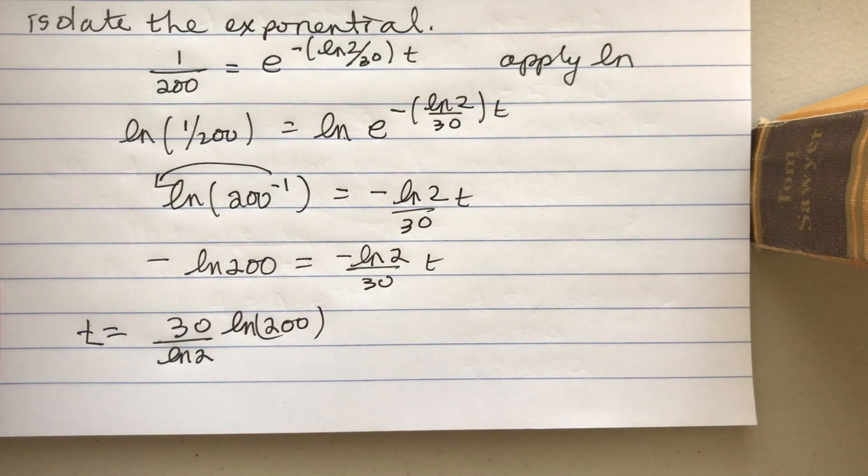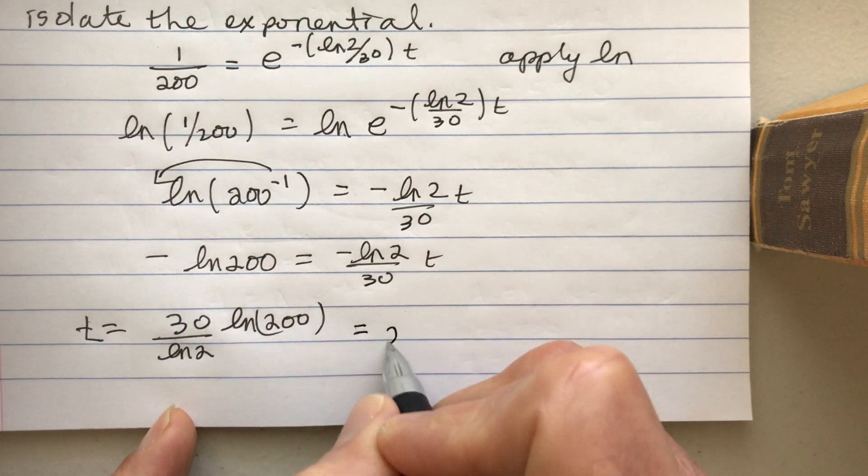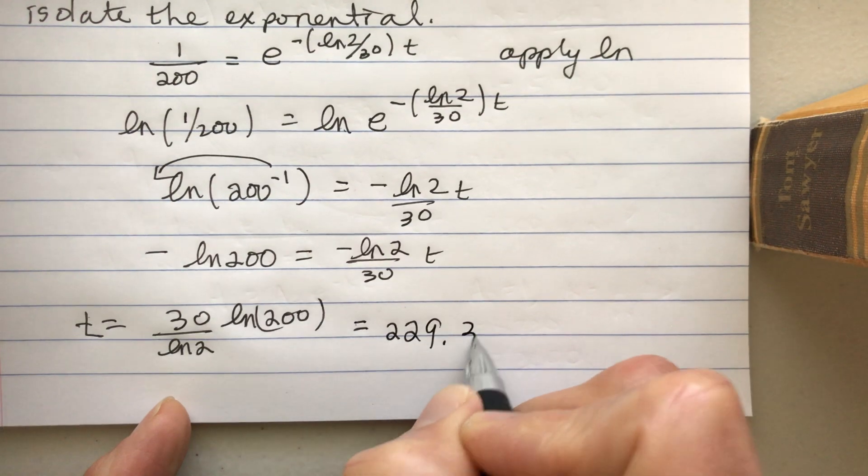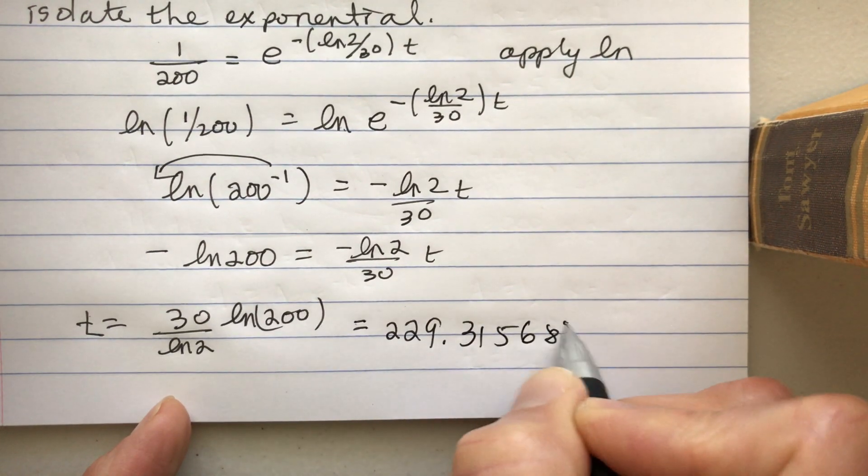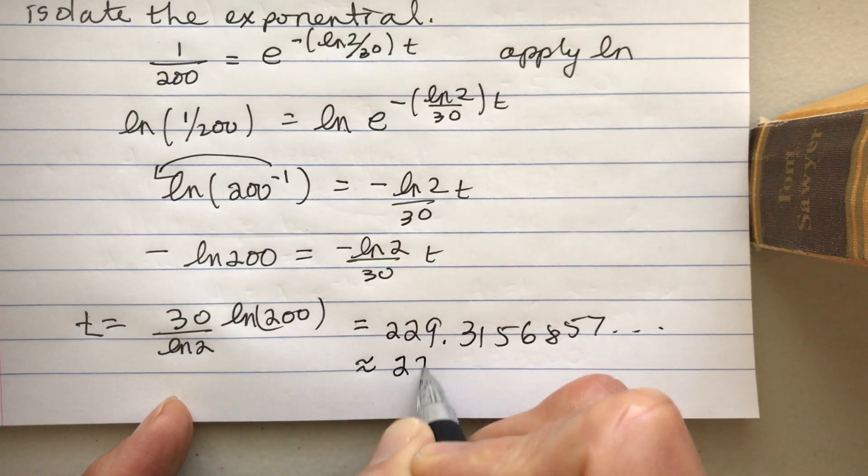Just to make it more interesting, you can put that in a calculator. We get 229.315685... it keeps going on forever. So that's about 229 years.